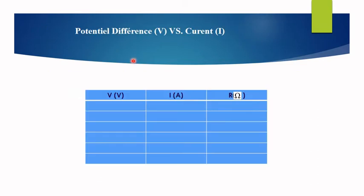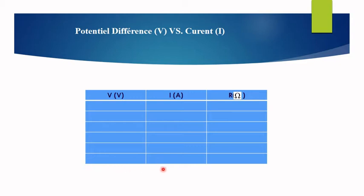Record the data between potential difference and current in a table, and calculate R by dividing the potential difference V by I to get the value of R mathematically. After that, plot the graph between potential difference and current, with potential difference on the y-axis and current on the x-axis. Then plot the graph and take the slope.